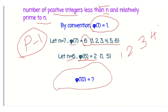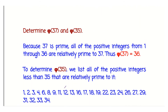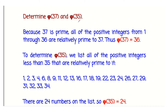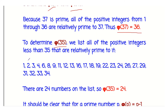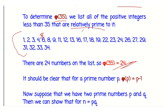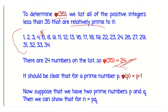Let us calculate φ(37) and φ(35). Since 37 is a prime number, φ(37) = 36. For φ(35), we count the positive integers less than 35 that are relatively prime to 35. The count is 24, meaning there are 24 numbers relatively prime to 35. Those that are not relatively prime have common divisors other than 1.